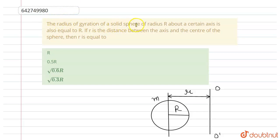The radius of gyration of a solid sphere of radius r about a certain axis is equal to capital R. If r is the distance between the axis and the center of the sphere, then r is equal to... In this question, we have to find the value of r.